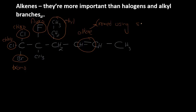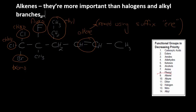But the alkene, remember, is named using the suffix E-N-E. So now, how do I put this name together? Basically, where's carbon 1? Well, in order to do this, I need the priority list.